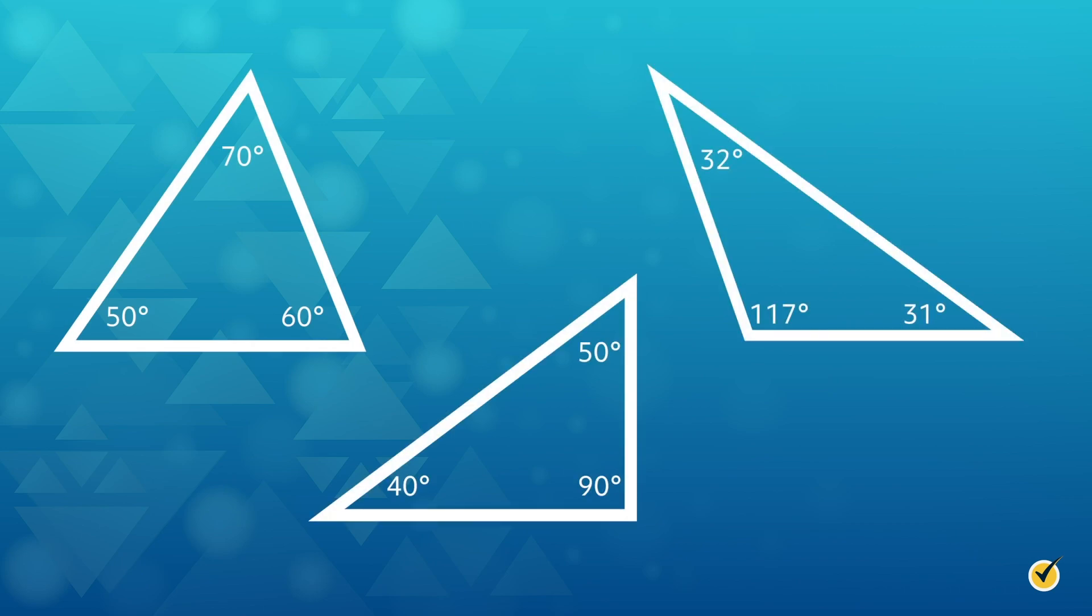But how do you know which is which? Take a look at the largest angle of each triangle and note whether or not the angle is more than, less than, or equal to 90 degrees. We can see that the largest angle in the triangle on the left is 70 degrees. 70 is less than 90, so this is an acute triangle.